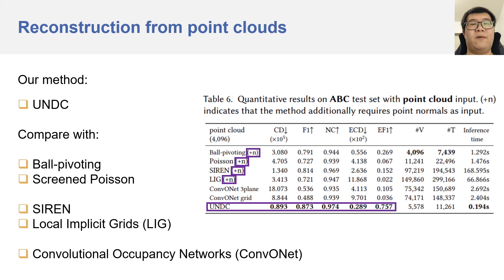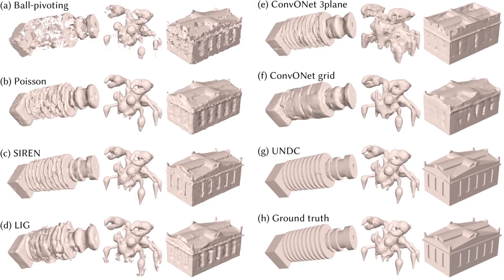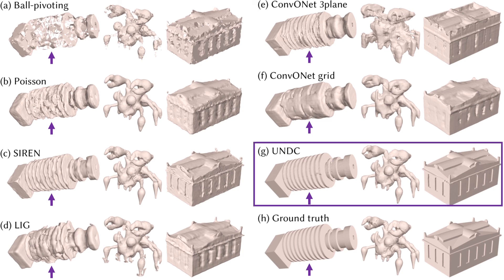Still, our method outperforms all others in terms of reconstruction quality and sharp feature preservation. We produce the second least number of vertices and triangles, and our method is the fastest. Here are some visual results. It is clear that our method performs the best.